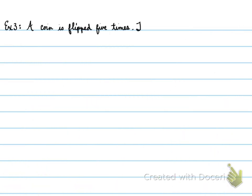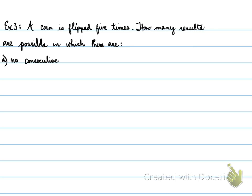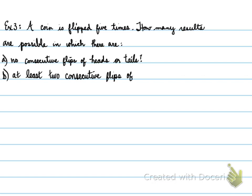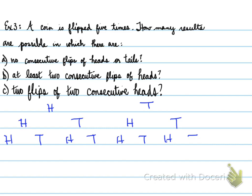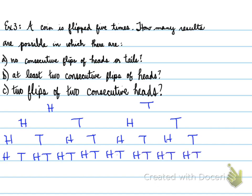Example 3. A coin is flipped 5 times. How many results are possible in which there are: no consecutive flips of heads or tails; at least 2 consecutive flips of heads; and 2 flips of 2 consecutive heads? First, we have to draw a tree diagram — this is going to be a complex one because we're doing it for 5 coins. One coin is heads and tails. The second coin gets flipped heads and tails for each coin from the previous line, and so on.